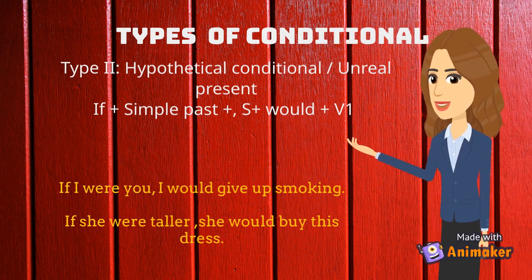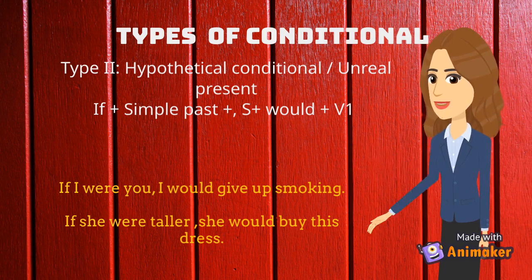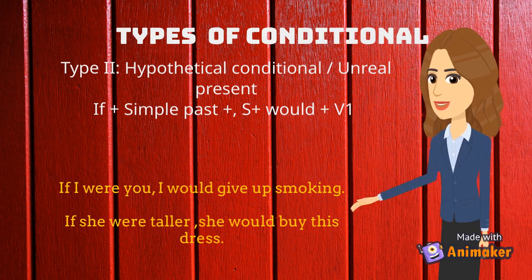Other examples for the second type of conditional: 'If I were you, I would give up smoking.' 'If she were taller, she would buy this dress.' Pay attention to this kind of conditional, where the auxiliary used will usually use 'were' instead of 'was' for any subject.